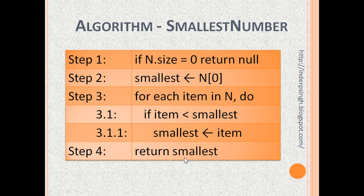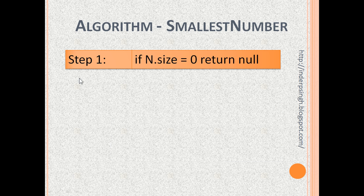Now, let us see this algorithm step by step. Step 1: If n.size is 0, meaning there are no numbers in the list, return the output null.